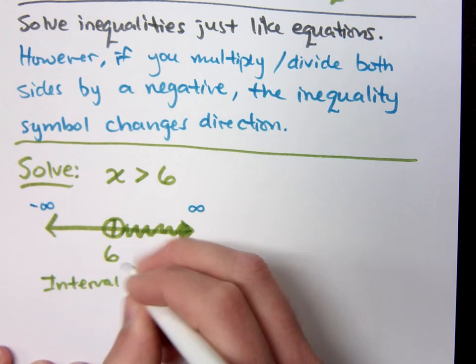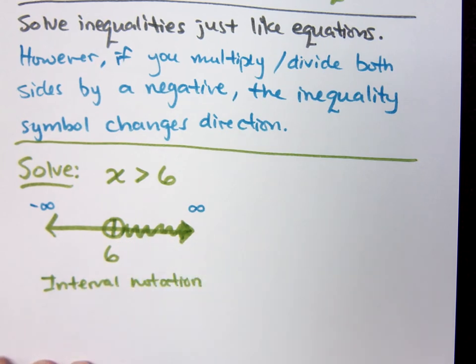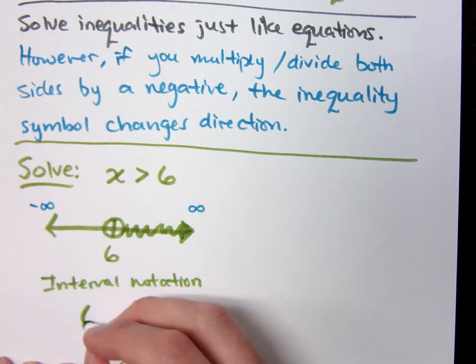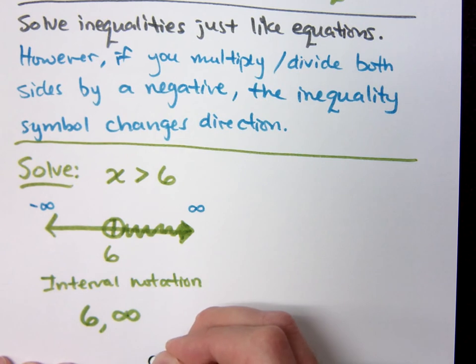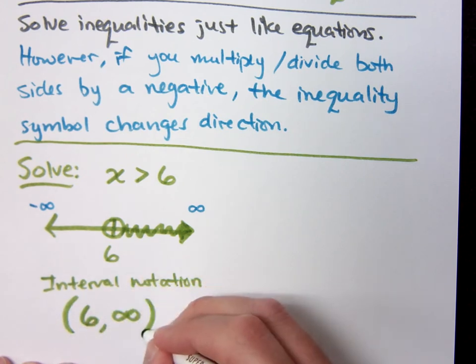Now, the reason I'm showing this to you is so we can talk about something called interval notation. And again, there's a whole video about interval notation on my YouTube channel. Interval notation takes what you see on the interval, and it will express it from left to right. So from left, I'm coming from 6, and I go out to infinity on the right. And I'll use parentheses around these.